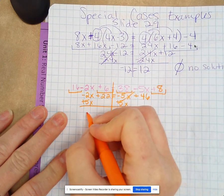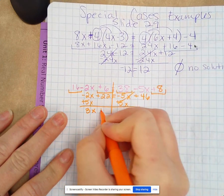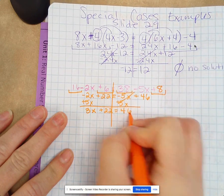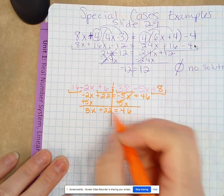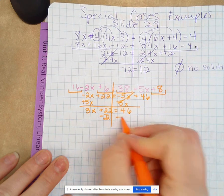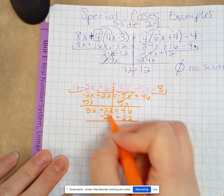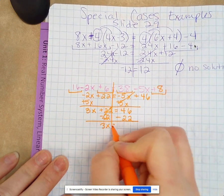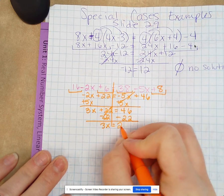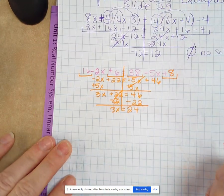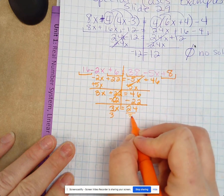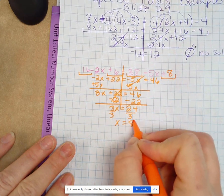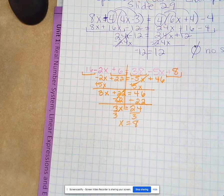So we get 3x plus 22 equals 46, minus 22 on both sides. 3x equals 24. Then divide by 3, x equals 8.